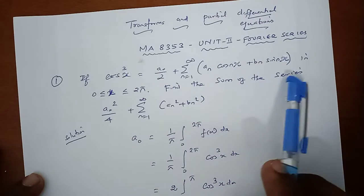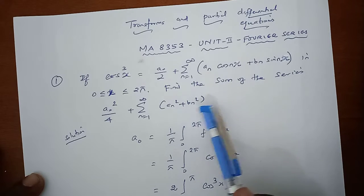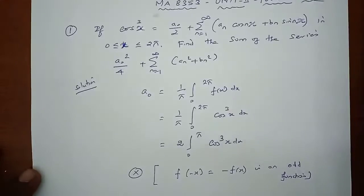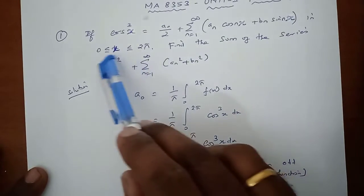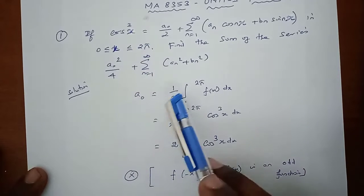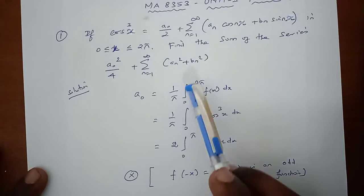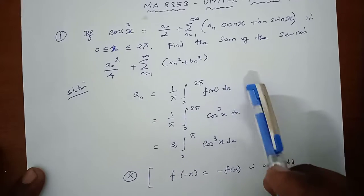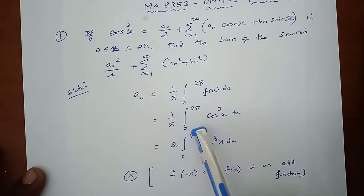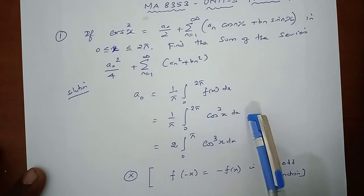We have to apply Parseval's formula. We will compute the value. First we have to take the full range series on 0 to 2π. We apply the a₀ formula: a₀ = (1/π) integral from 0 to 2π of f(x) dx, which equals (1/π) integral from 0 to 2π of cos³x dx.